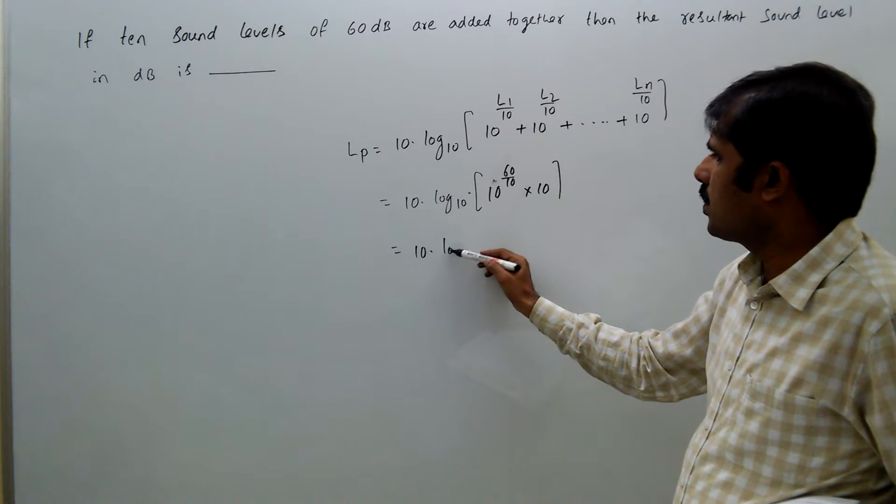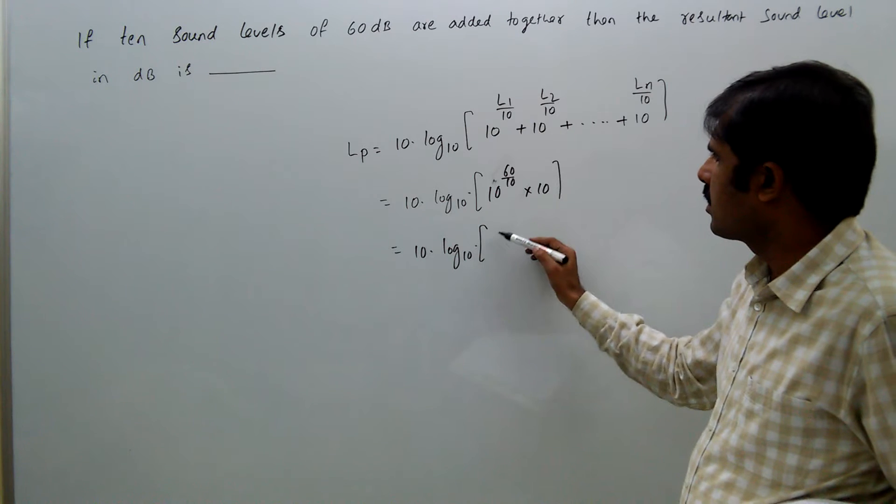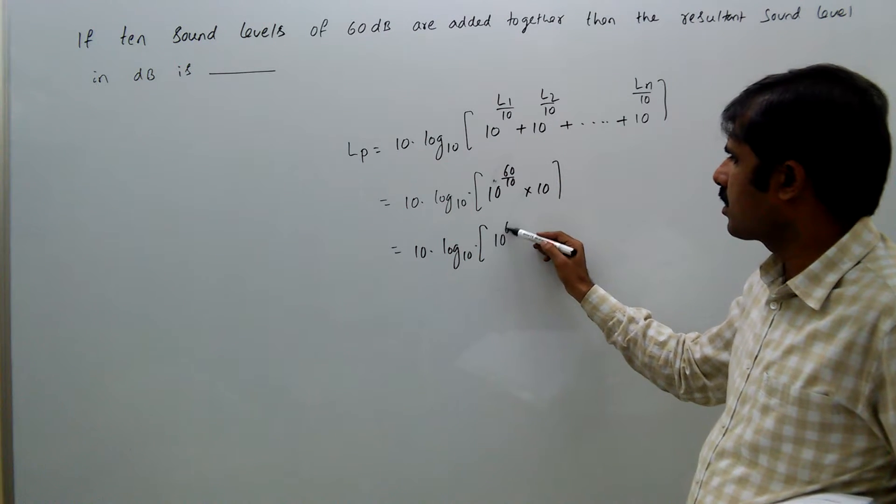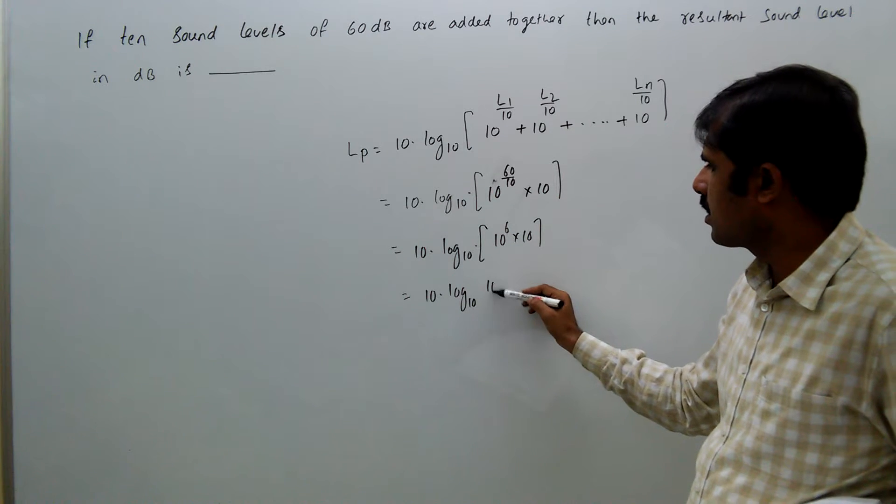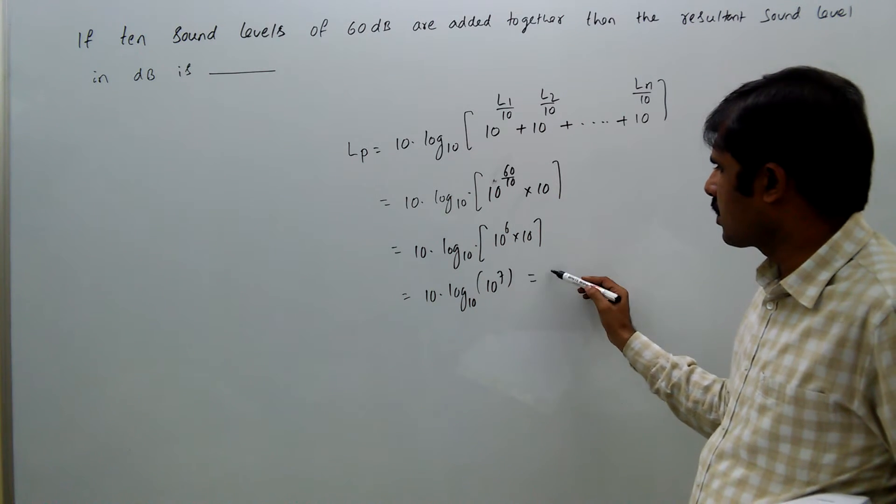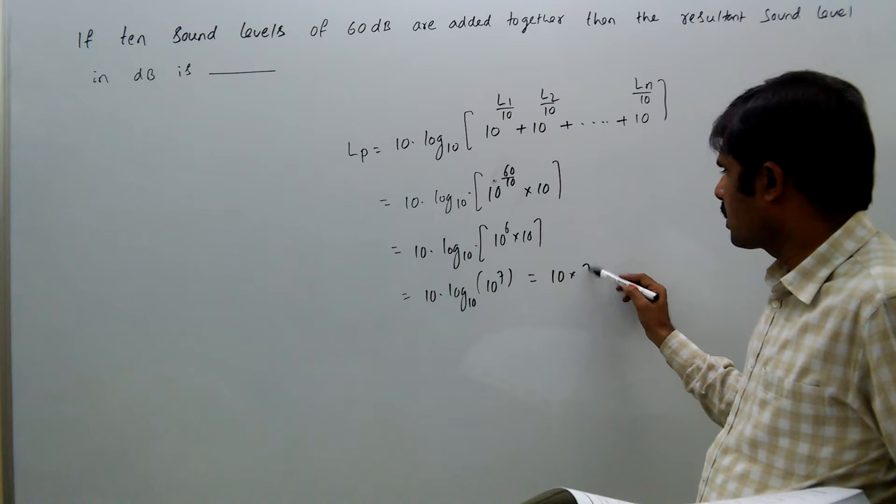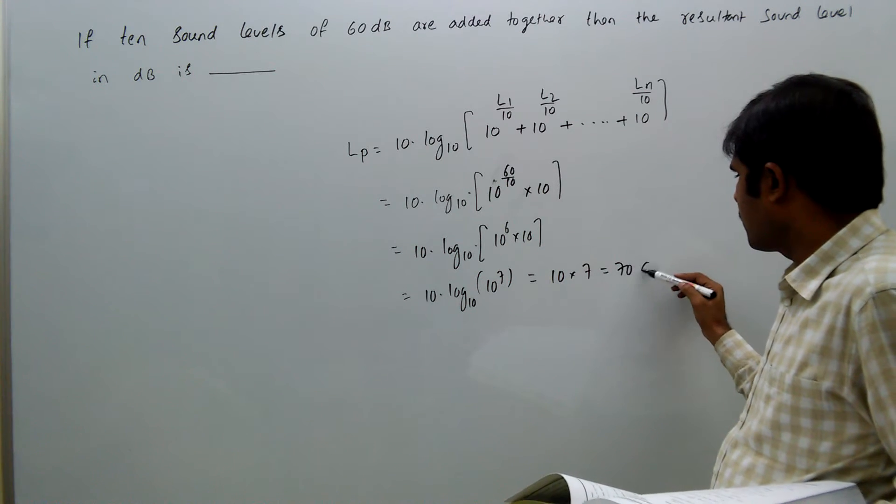That equals 10 log base 10 of 10^7, which equals 10 times 7, which equals 70 decibels.